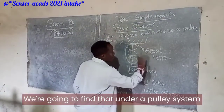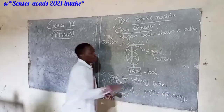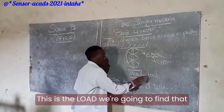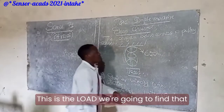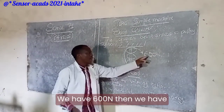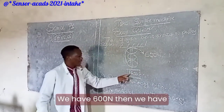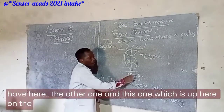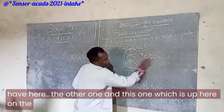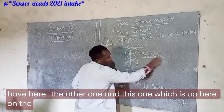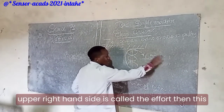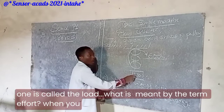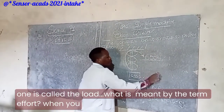Under the pulley system as shown in the diagram, we have the effort and the load. We are going to find that we have 600 newtons, then we have 1,200 newtons. The value on the upper right-hand side is called the effort, and the other is called the load.